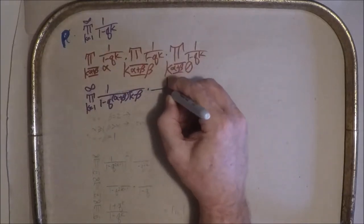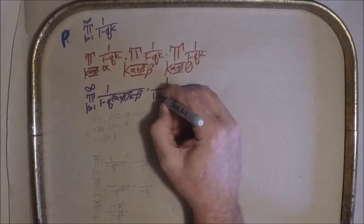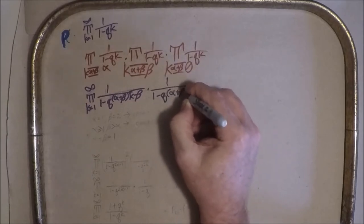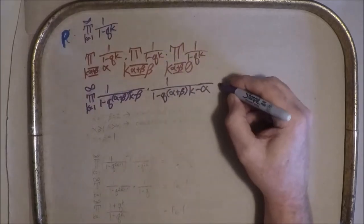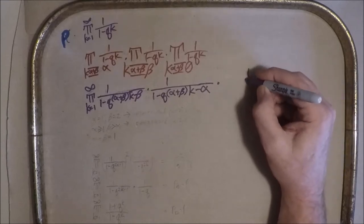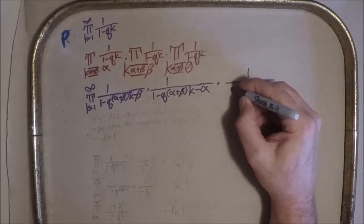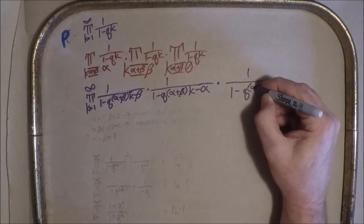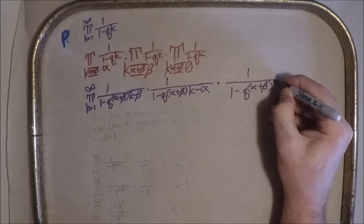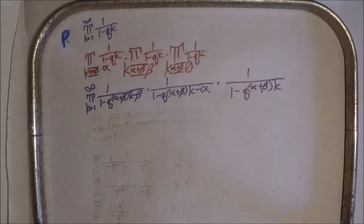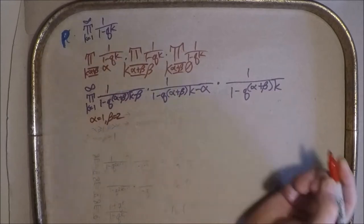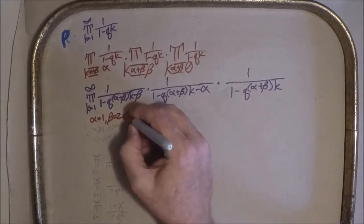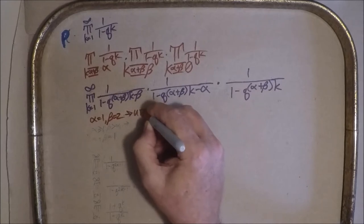Similarly, we will then have one over one minus Q to the alpha plus beta times K minus alpha. That's going to give us our beta terms. And then finally, one minus Q to the alpha plus beta K. They're going to give us our zero mod alpha beta terms. When alpha equals one and beta equals two, then we have unrestricted partitions.